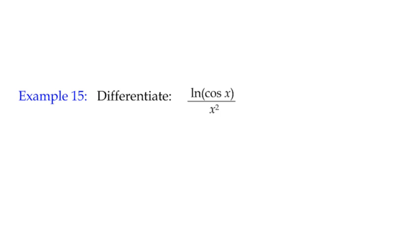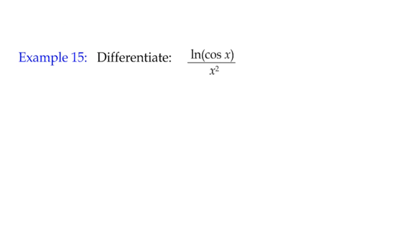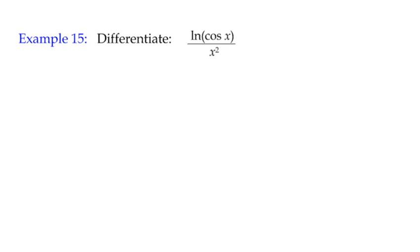Having a look at example 15, again we've got a function which includes a natural log term within it. We've got log of cos(x) divided by x squared, that becomes my function.